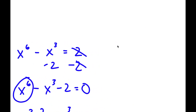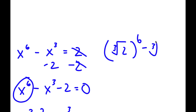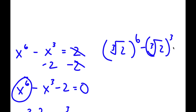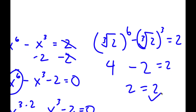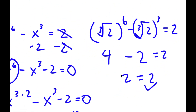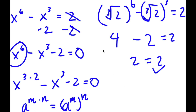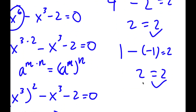Now to check, I'm going to plug these two in. First, the cube root of 2: the cube root of 2 to the power of 3 equals 2, and the cube root of 2 to the power of 6 is 4. So I have 4 minus 2 equals 2, and 2 equals 2, so this is right. For negative 1: negative 1 to the power of 6 is 1, and negative 1 to the power of 3 is negative 1. So 1 minus negative 1 is 2, and 2 equals 2. Both solutions are correct.